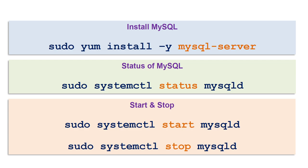Once MySQL is installed, to check whether the MySQL service is running you will use the systemctl status mysqld command. If it is not running, you can use systemctl start mysqld, and if you want to stop it you can use systemctl stop mysqld.